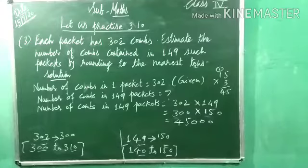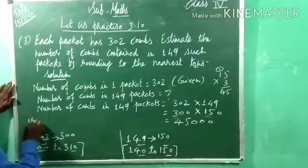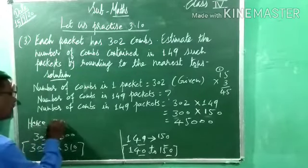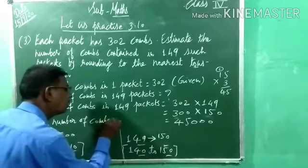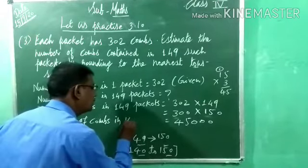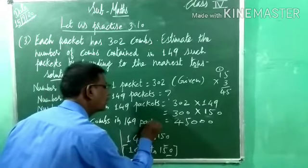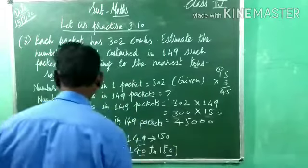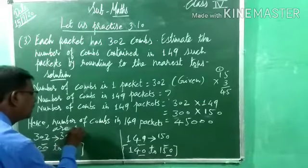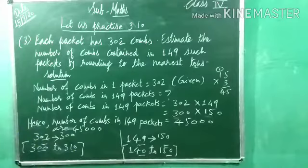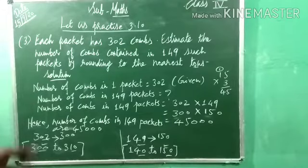Hence, the number of combs in 149 packets is 45,000. We estimated by rounding to the nearest tens. For a word problem, try to write the solution in sentence form and then find the answer.